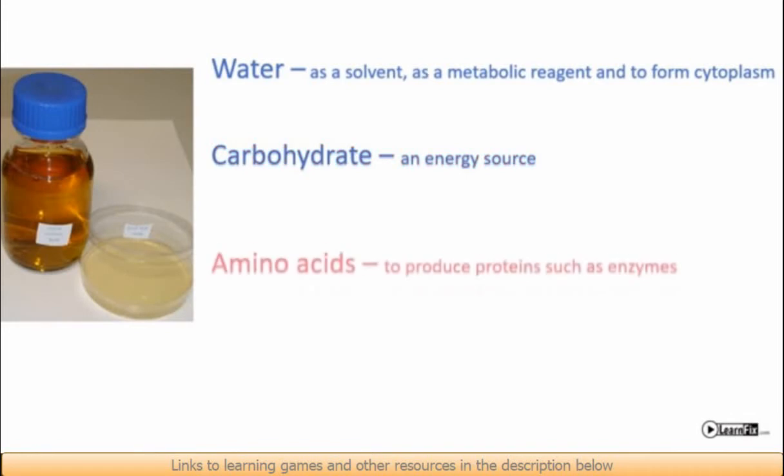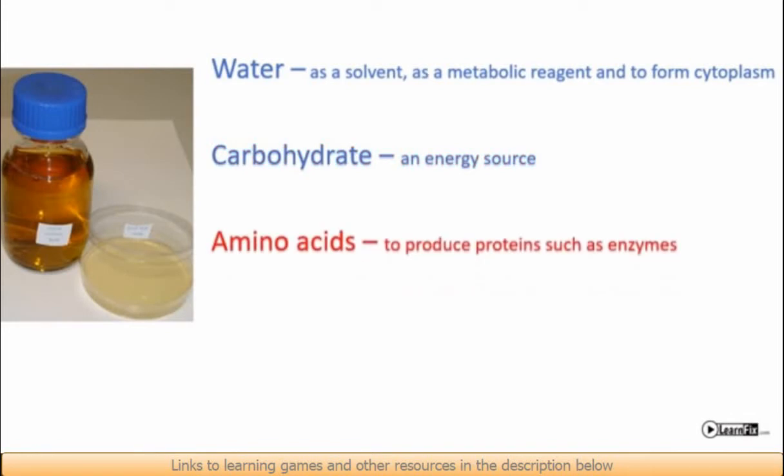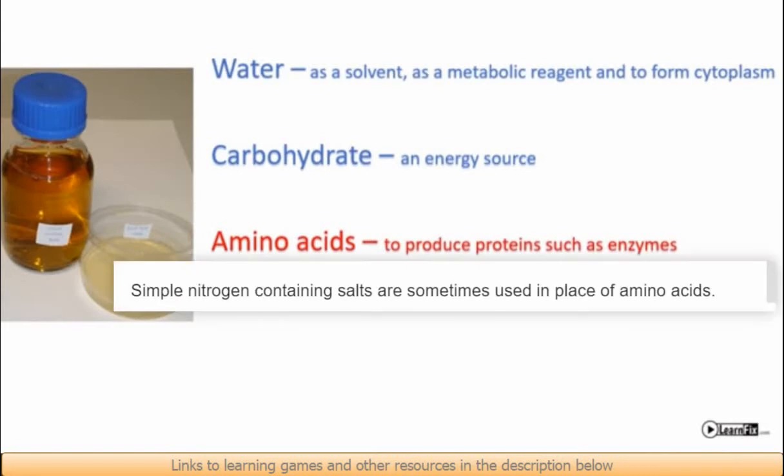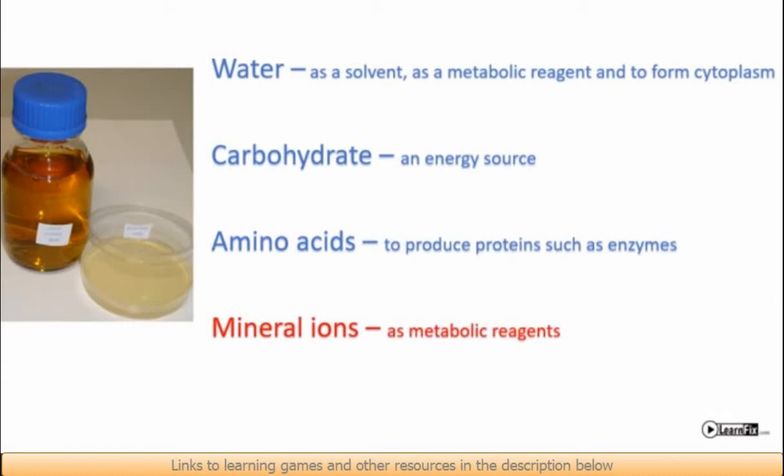There'll need to be some amino acids because they're needed for the bacteria to produce the proteins that it needs such as the enzymes of metabolism and the structural components of its cell. There'll need to be some mineral ions because they're the components needed in metabolic reactions.